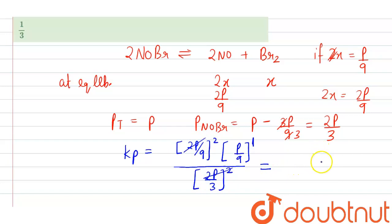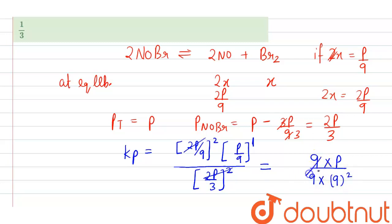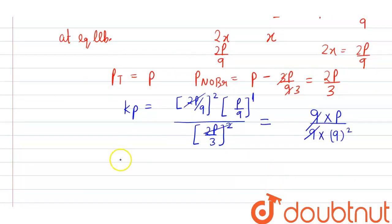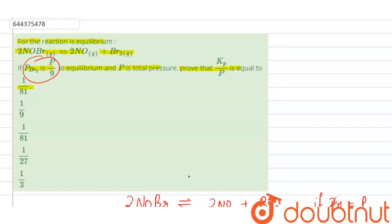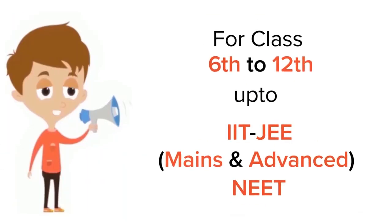On solving, the 2p squared terms cancel. We get 9 × p divided by 9 × 9², where a factor of 9 cancels, and the value of Kp/p becomes equal to 1/81. So the second option is correct.